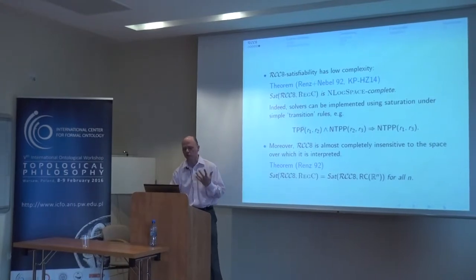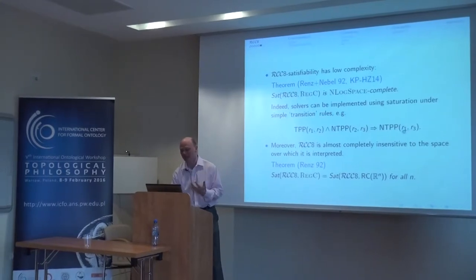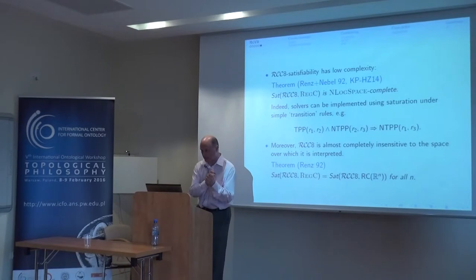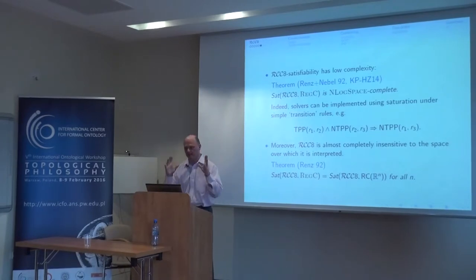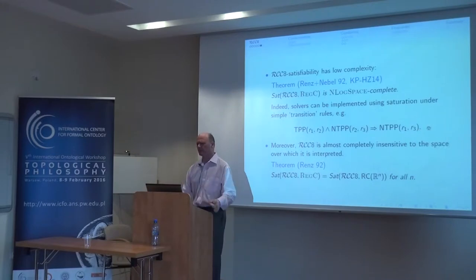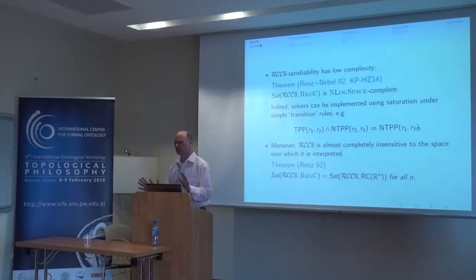There are solvers that have been developed to do it and they work very well. Typically they work by applying rules — so if you know that R1 is a tangential proper part of R2, and R2 is a non-tangential proper part of R3, it follows that R1 is a non-tangential proper part of R3. Such a system of rules can be developed which is sound and complete. But the important part is the actual definition — the thing I want people to focus on is the definition of the problem, not the rules. The rules are an implementation detail.